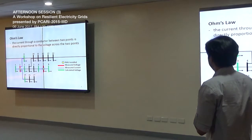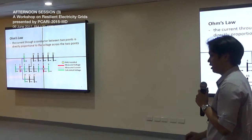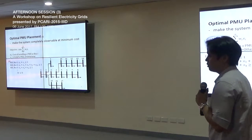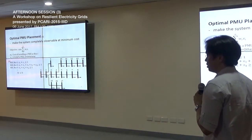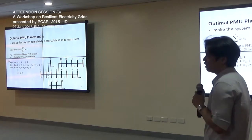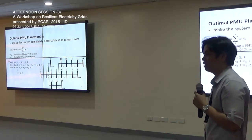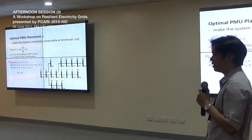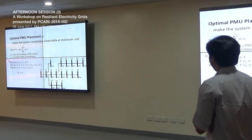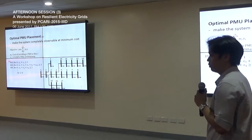With this knowledge, we can see that it is not necessary to install a PMU at all buses of our network. It is actually an optimization problem — an optimal PMU placement problem. Ideally, it is better to install PMUs at all buses, but realistically and economically, that may not be possible. Our goal in optimal PMU placement is to make the system completely observable at minimum cost.